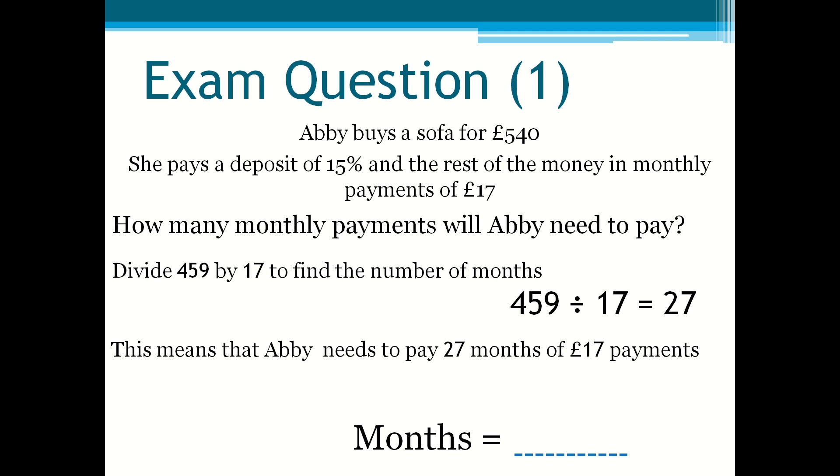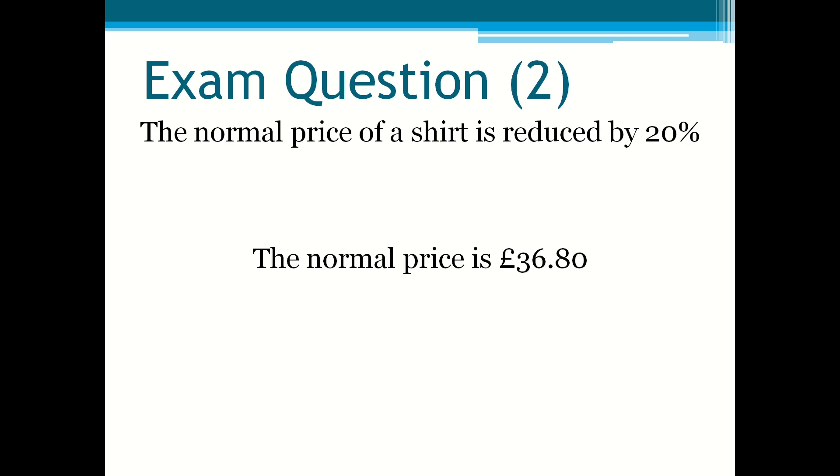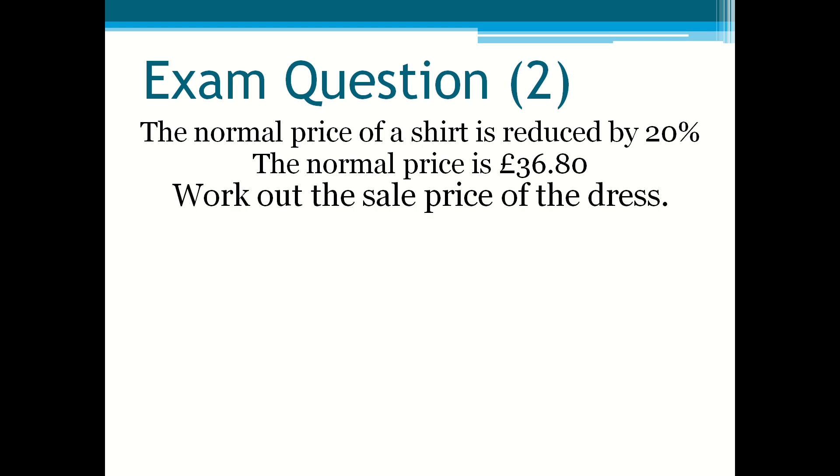Now we are going to look at the second exam question. The normal price of a shirt is reduced by 20%. The normal price is £36.80. Work out the sales price of the shirt or dress. It can be anything. Usually they like to do clothing or a car or a piece of technology.